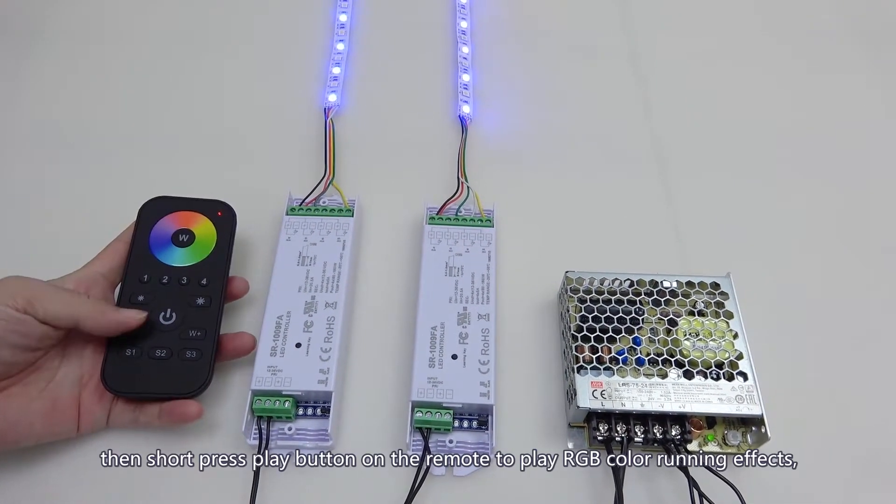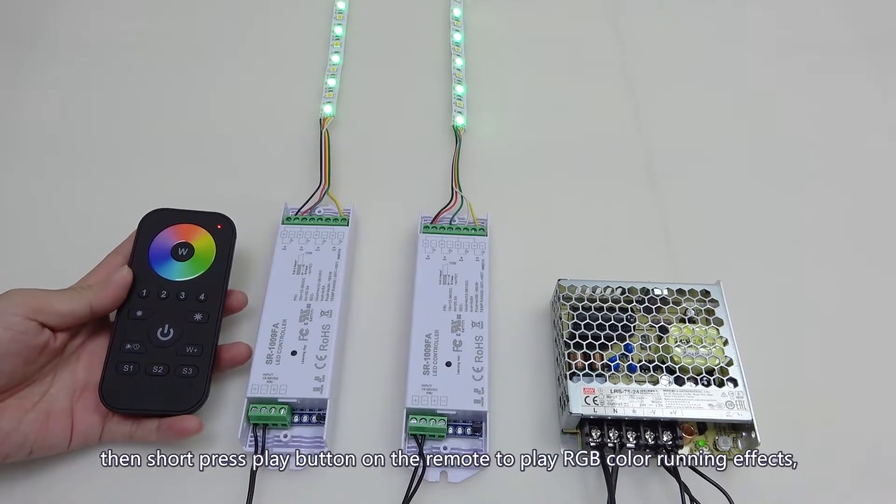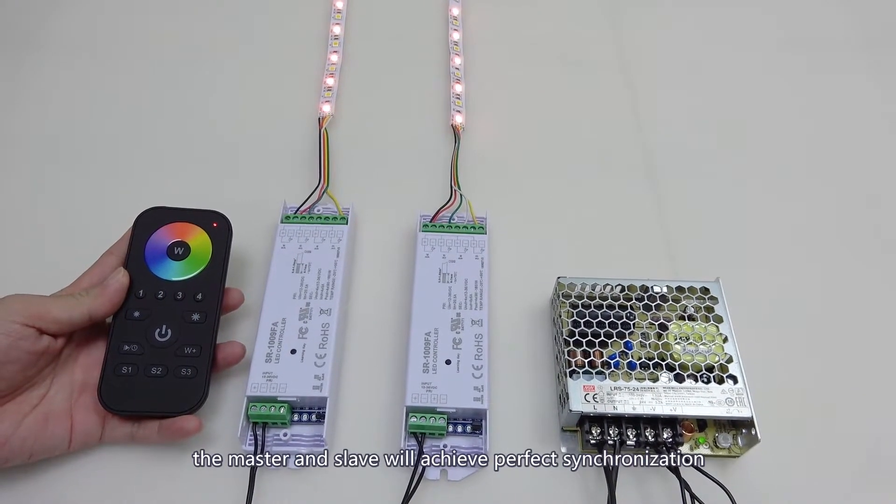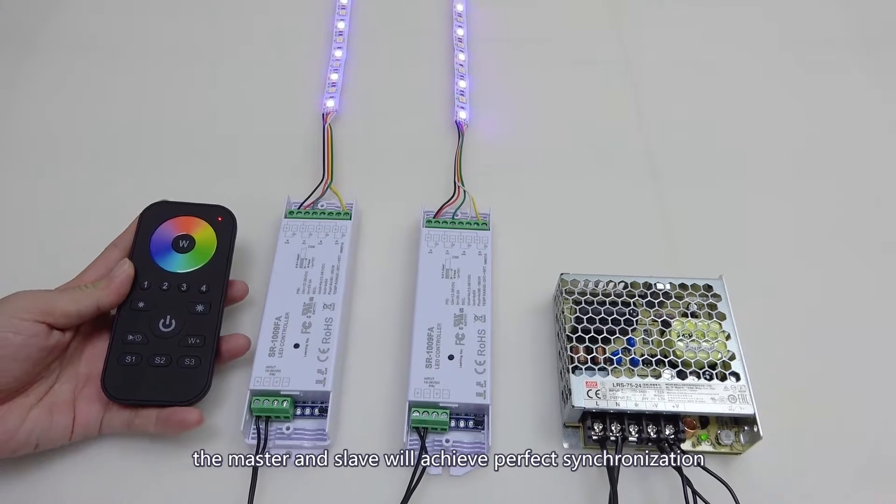Then short press the play button on the remote to play RGB color running effects. The master and slave will achieve perfect synchronization.